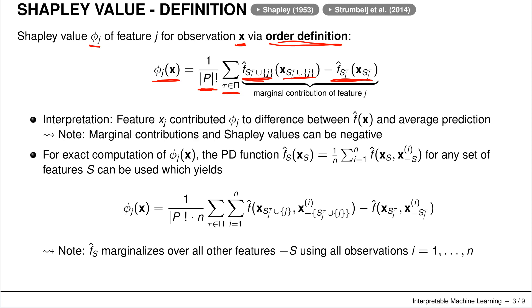The interpretation is that feature x_j contributed its Shapley value to the difference between the prediction and the average prediction. This also means that marginal contributions and Shapley values can be negative: if a prediction for an observation is less than the average, then some of the Shapley values have to be negative.